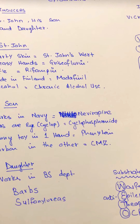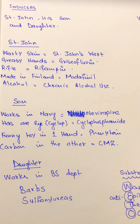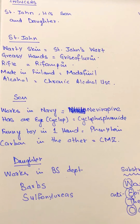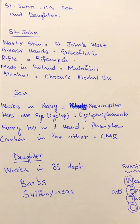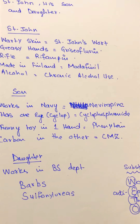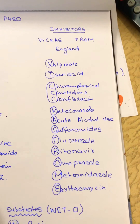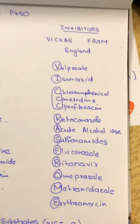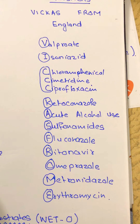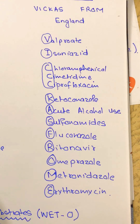Now his son, who has one eye, works in the navy. He has a funny toy in one hand and carbon in the other. So navy: nevirapine, cyclophosphamide, phenytoin, and carbamazepine. And his daughter works in the behavioral sciences department — so barbiturates and sulfonylureas.